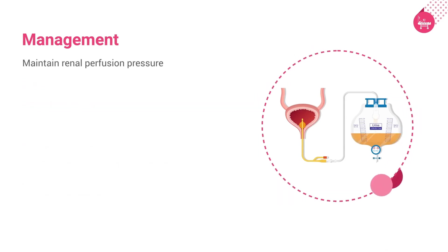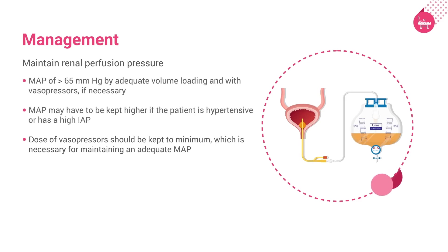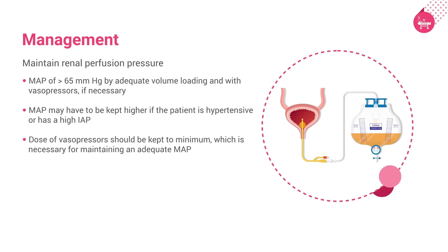Maintain renal perfusion pressure. Maintain mean arterial pressure (MAP) of more than 65 mmHg by adequate volume loading and vasopressors if necessary. MAP may need to be kept higher if the patient is hypertensive or has a high intra-abdominal pressure (IAP). In cases of high IAP, renal perfusion pressure equals MAP minus 2 times IAP, and a higher MAP is desirable. Doses of vasopressors should be kept to the minimum necessary for maintaining adequate MAP.